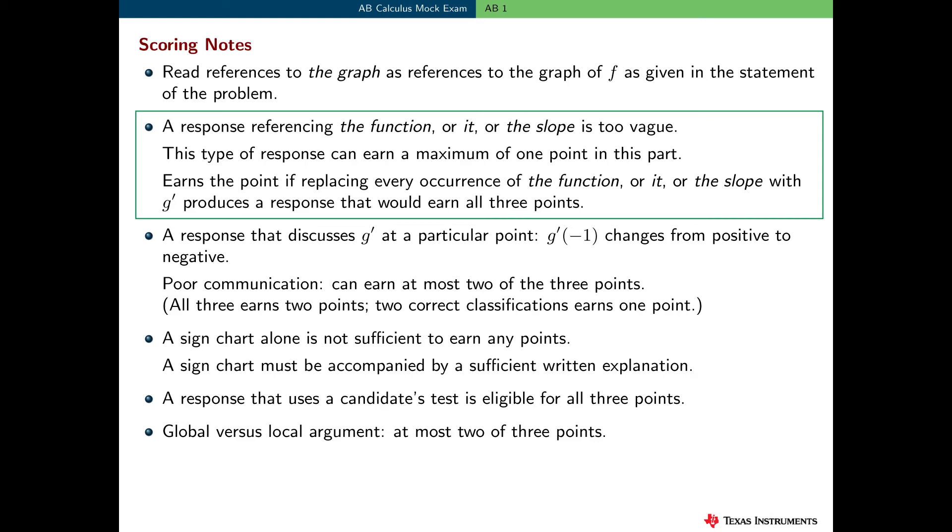Now, the student can still earn one point if replacing every occurrence of the function or it or the slope with g prime produces a response that would earn all three points. Some students may discuss g prime at a specific point rather than in a neighborhood. For example, a student may say that g prime of minus one changes from positive to negative. Now, we usually treat this as poor communication, and the student can earn at most two of the three points in this part of the problem. If they talk about a specific point with correct responses or classifications in all three cases, then they earn two points. And if they have two correct classifications, they earn one point.